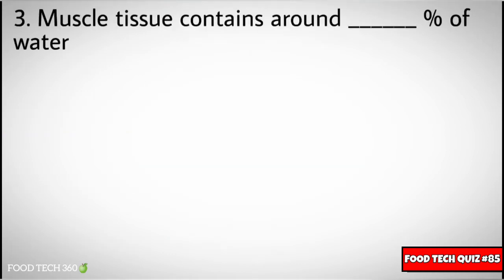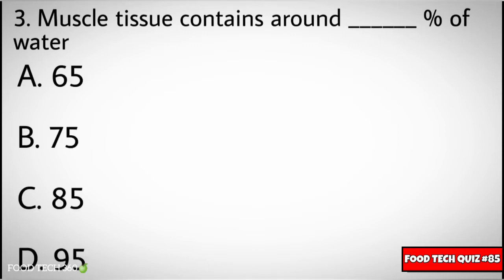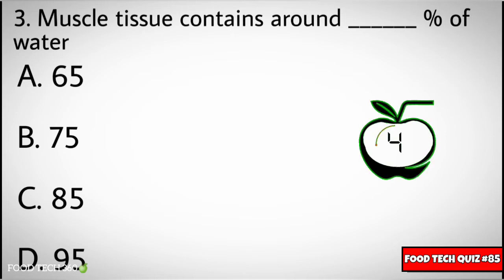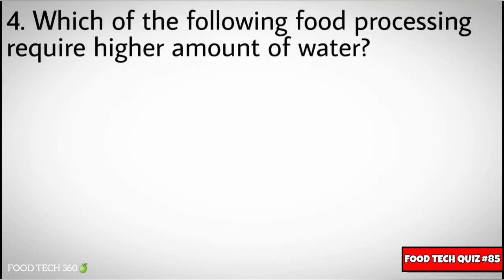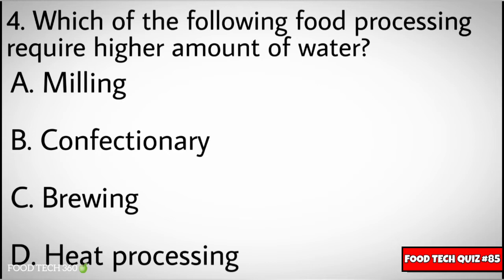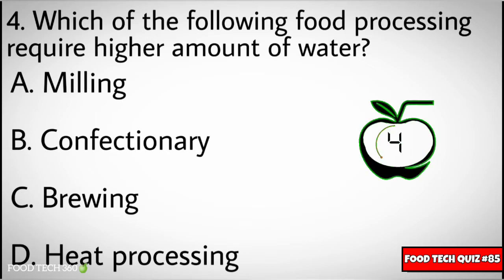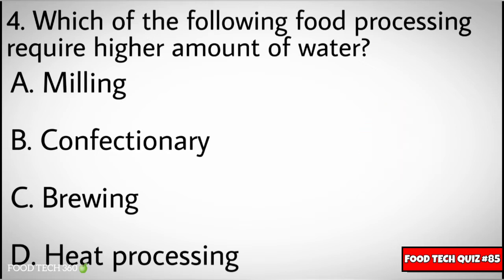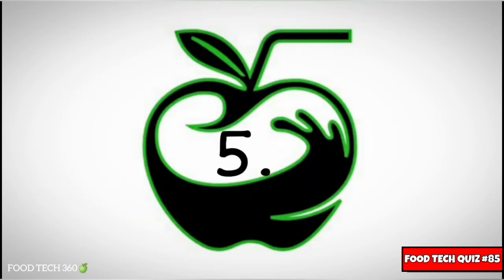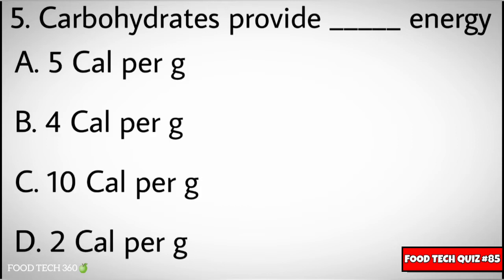Question number three: muscle tissue contains around what percentage of water. Options: A) 65%, B) 75%, C) 85%, D) 95%. Correct answer: B) 75%. Question number four: which of the following food processing requires a higher amount of water. Options: A) milling, B) confectionery, C) brewing, D) heat processing. Correct answer: C) brewing.